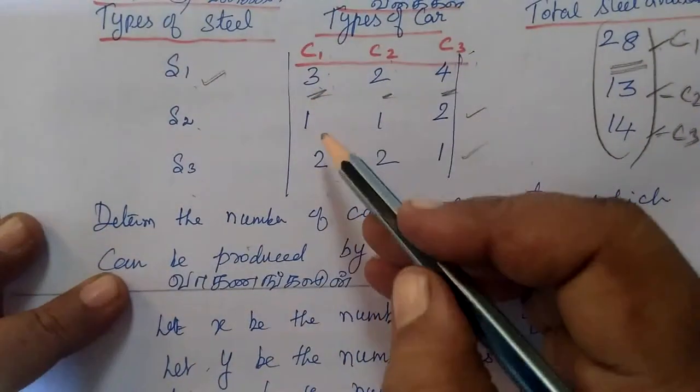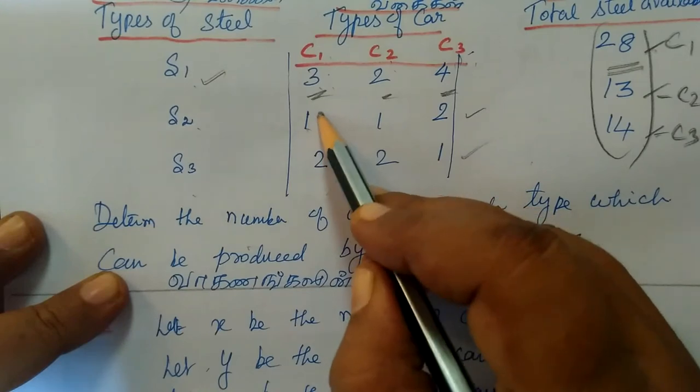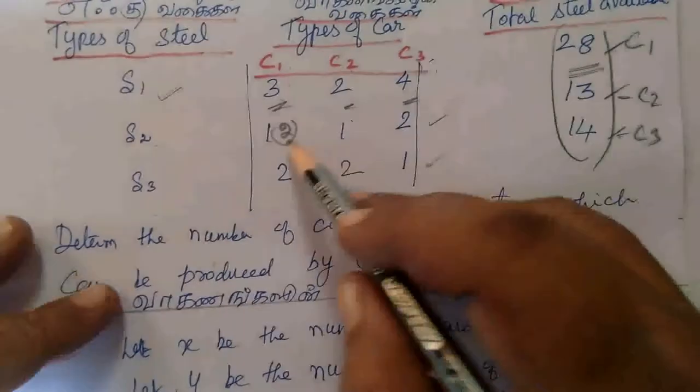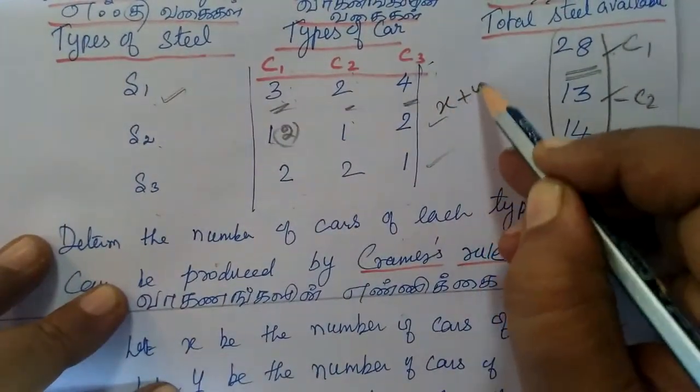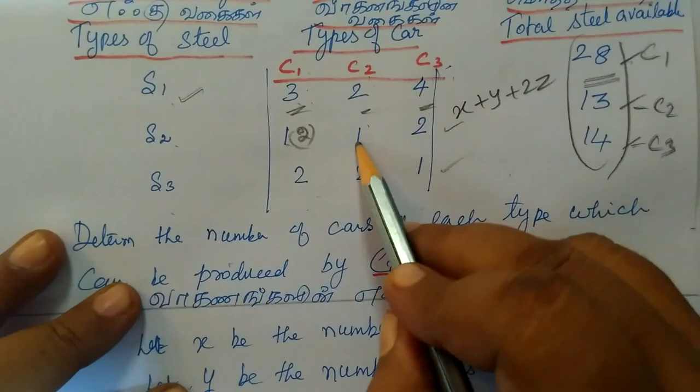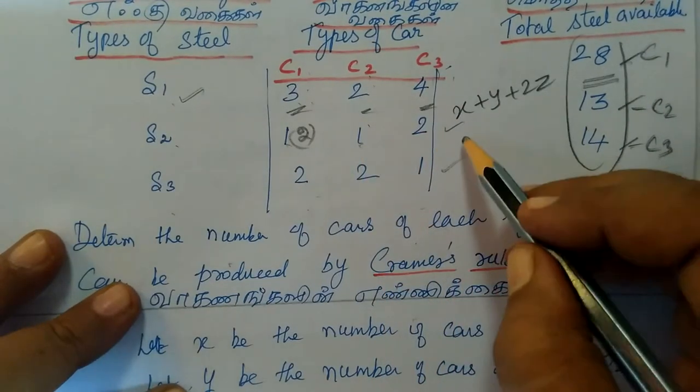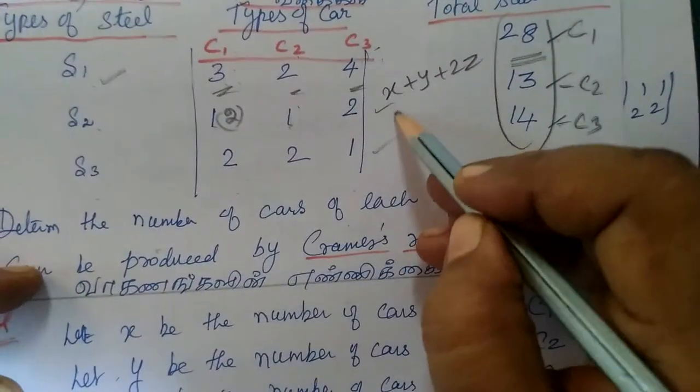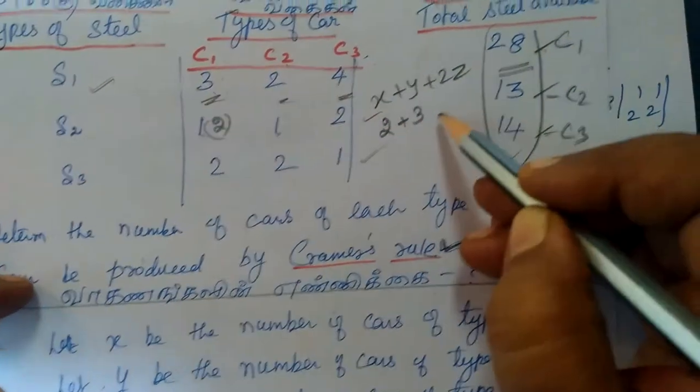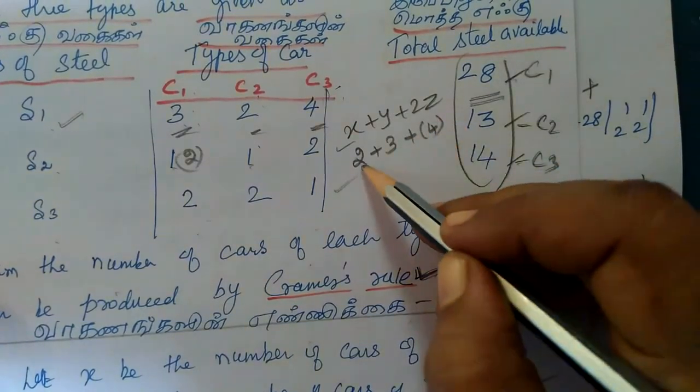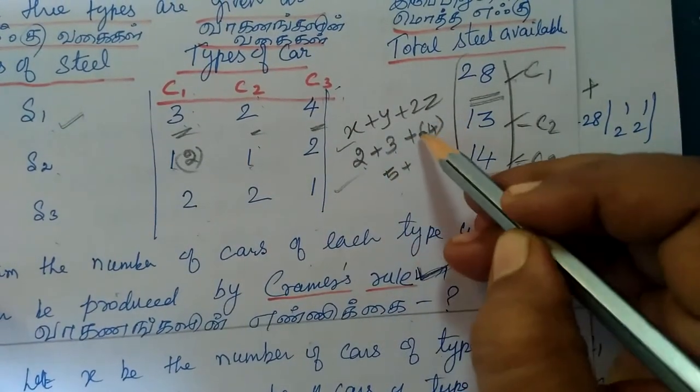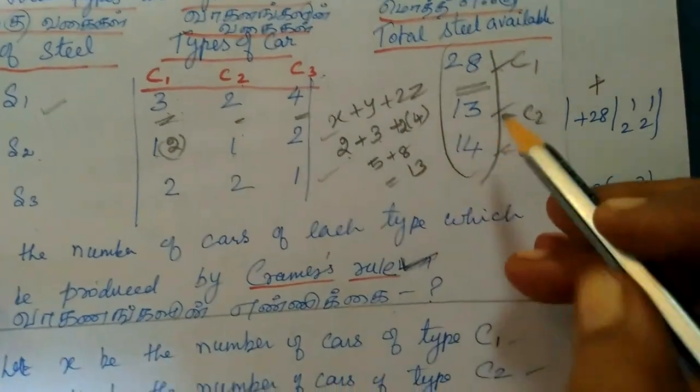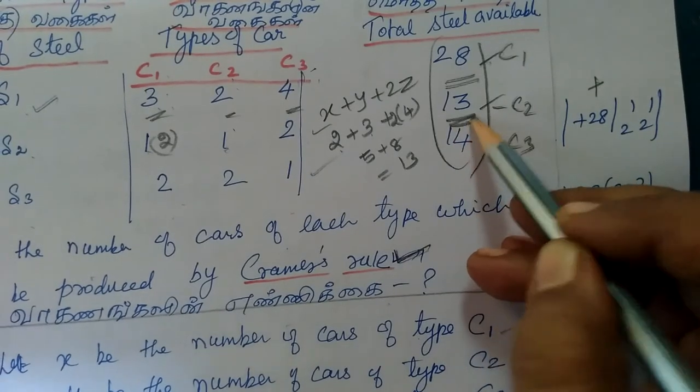Now we are verifying. For the first equation: x plus y plus 2z, this is 1x plus 1y plus 2z. So x is 2, y is 3, z is 4. This gives 2 plus 3 plus 2 times 4, which is 2 plus 3 plus 8 equals 13, which is what we have on the right side. So this is correct.